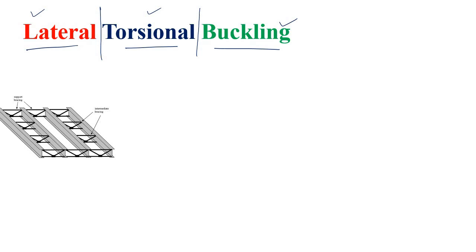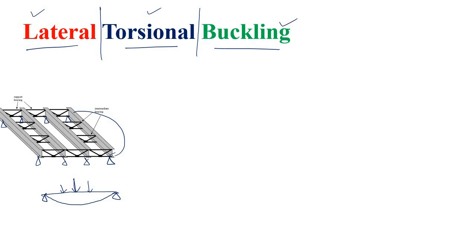Lateral means something out of the plane. For example, you can see in this picture the supports of a beam. Normally, if you apply a vertical load to a beam it will bend vertically, but lateral means out of plane — bending in the sideways direction.